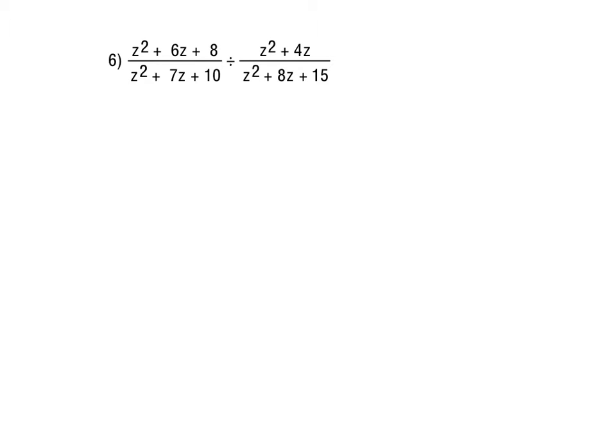Number 6 is another division. Again, we would factor each of those pieces again flipping and factoring that divisor there. So the z squared plus 6z plus 8 would factor as z plus 2, z plus 4.